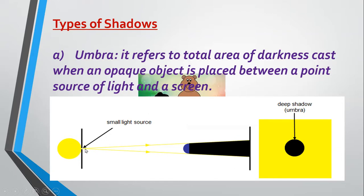The diagram explains things better. This is a point source of light with rays of light hitting an opaque object. The rays are blocked by the opaque object, so an area of darkness is cast on the screen. The area of deep shadow or total darkness cast is called the umbra, as you can see on the screen.